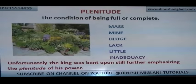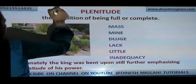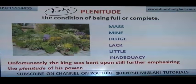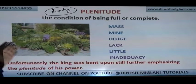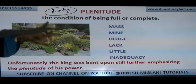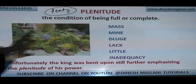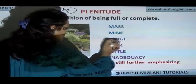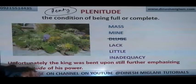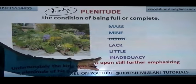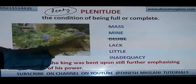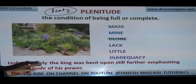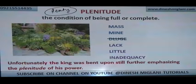Plentitude — you can remember this by the word 'plenty.' Plentitude is something which is full, complete, covering everything. The condition of being full or complete. Synonyms: mass, abundance. Antonyms: lack, little, inadequate — in short supply. Example: 'Unfortunately, the king was bent upon still further emphasizing the plentitude of power.'